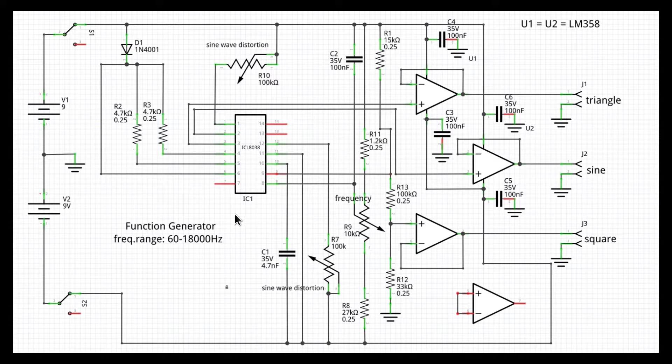Trimmers R7 and R10 are used to adjust the shape of the sine wave, one for the upper crests and one for the lower crests, and we will see shortly their effect in lab.